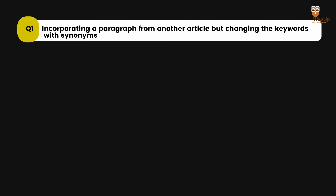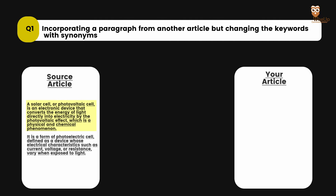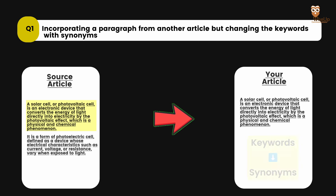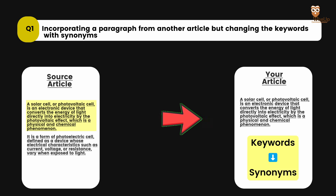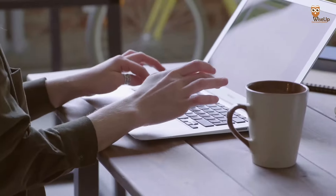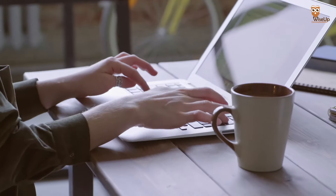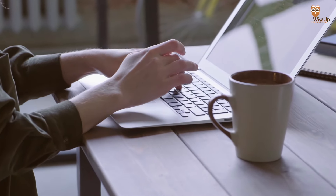First situation: incorporating a paragraph from another article but changing the keywords with synonyms. Is this plagiarism or not plagiarism? The right answer is — it is plagiarism. Just changing the keywords with synonyms is not enough. There are two things that are missing that you need to do in order to avoid plagiarism, and we will talk about it very soon.